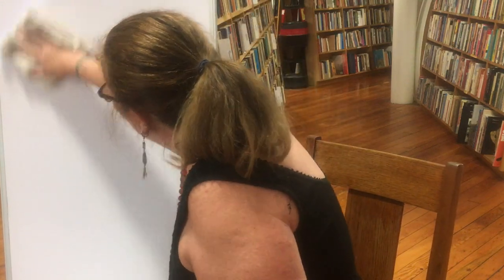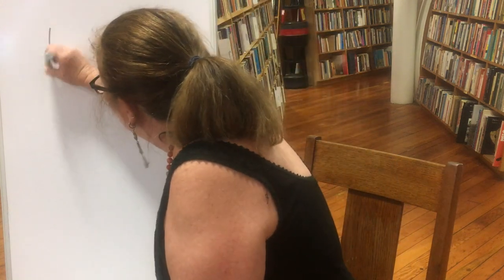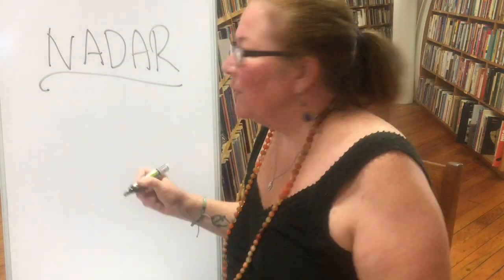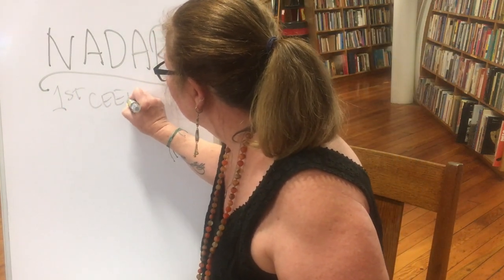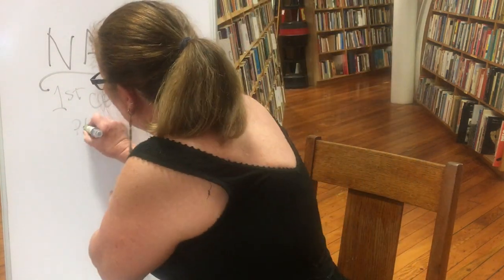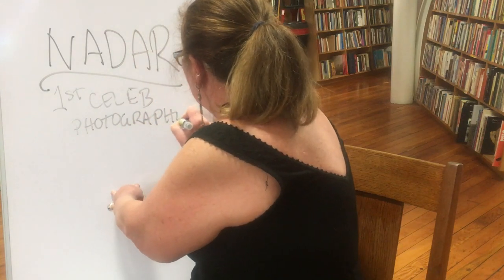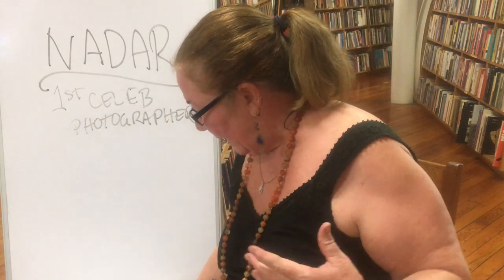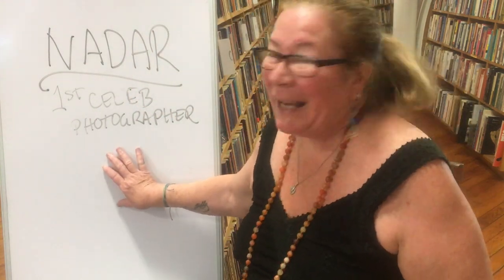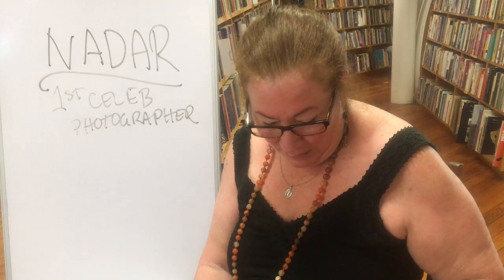The next really important person in photography is a guy by the name of Nadar. Nadar was the very first celebrity photographer — the very first paparazzi. He had just one name, like Cher, Madonna, or Prince, a kind of nom de plume. He had this great idea that people might want to have photographs of other famous people.